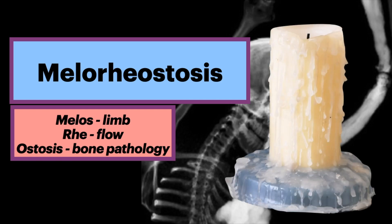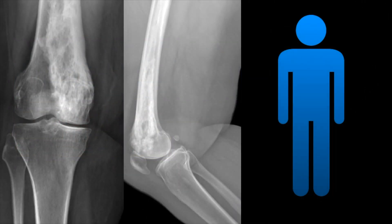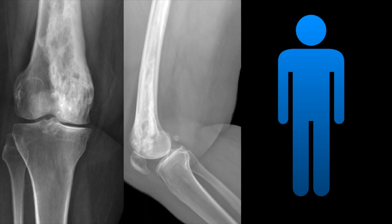Because of its resemblance to dripping candle wax, this condition may involve one or multiple bones of a single extremity. It often favors the lower extremity, spares the skull and face, and rarely involves the spine.